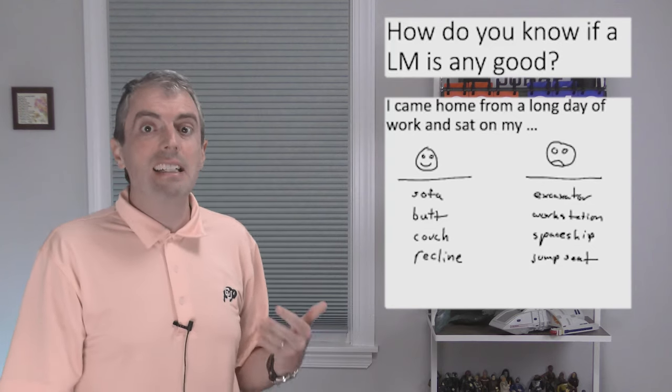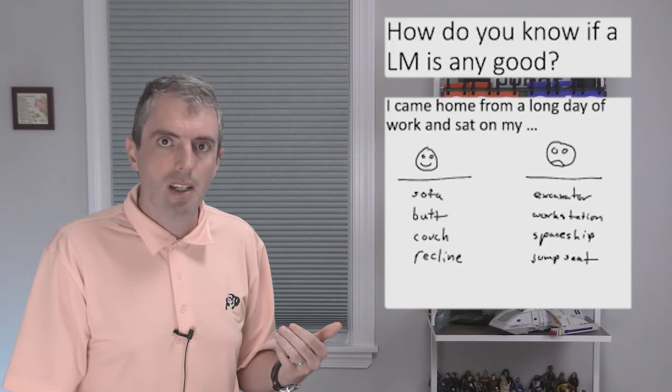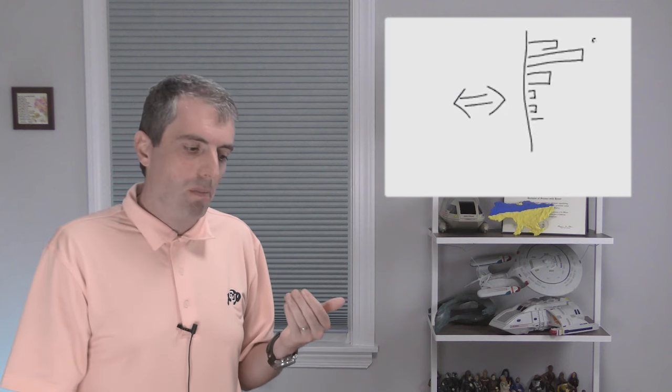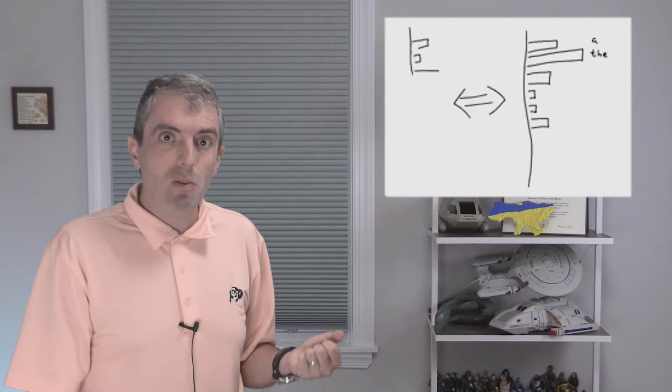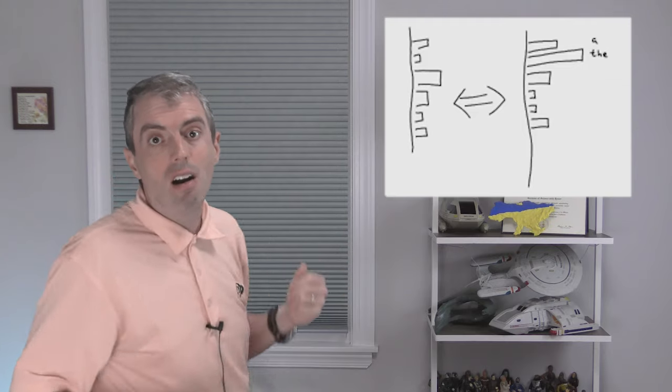The key idea is that we want to compare distributions. We have a true distribution that we want to model, and then a model that outputs some other distribution, and we want to know how different these two distributions over words actually are.